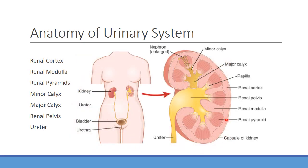Looking at the kidney more specifically, we have the renal cortex as the outer area, the renal medulla, and then the renal pyramids — this is where a lot of the nephrons are located. You can see an enlarged one here showing how the glomerulus is up near the cortex, with loops descending down into the medulla. We'll look at the minor calyxes, where collecting ducts join together, then to major calyxes, and finally into the renal pelvis where urine is excreted out through the ureter.